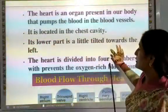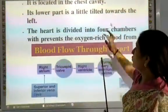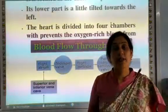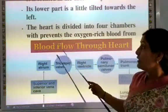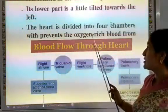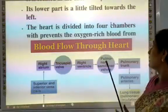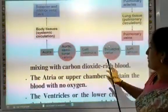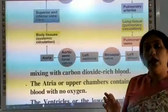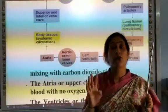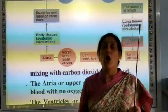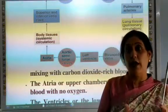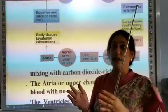The heart is divided into four chambers. These four chambers prevent oxygen-rich blood from mixing with the carbon dioxide-rich blood.